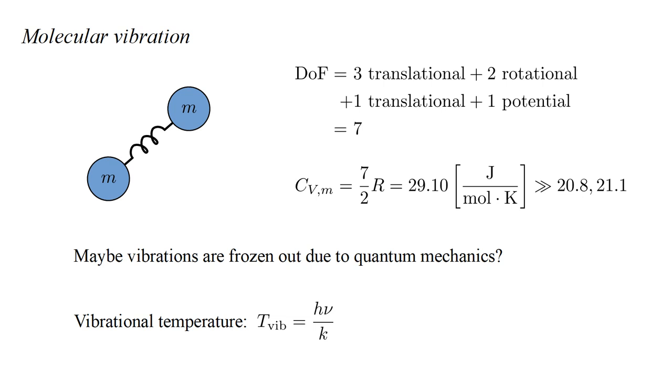Following the Einstein model, let's define the vibrational temperature of a vibrational mode with frequency nu as H nu over K. The vibrational temperatures for nitrogen and oxygen are 3521 and 2256 Kelvin. Note that using a simple spring to model a chemical bond is an approximation that glosses over the complexity of real bonds, but for our purposes, it's a good one.